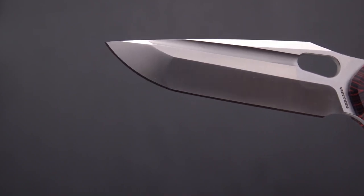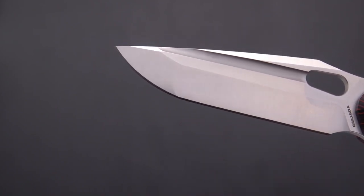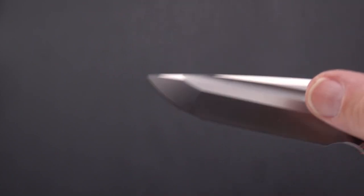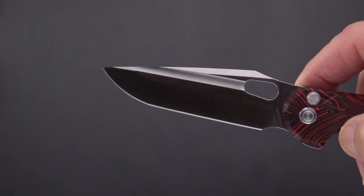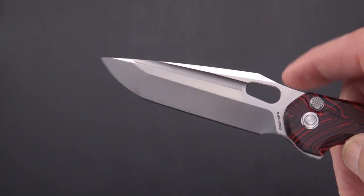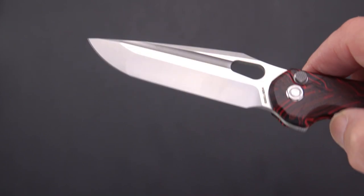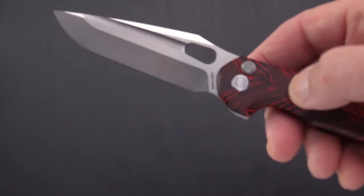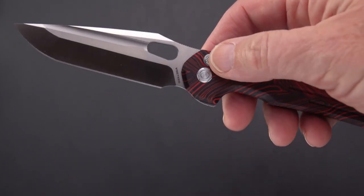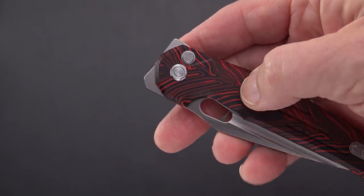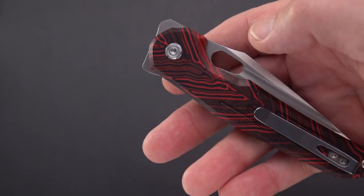We do have a hollow and we do have a flat, and we've got a very pronounced fuller, an opening hole, and yes it is a button lock. Check it out, we're going to talk more about that button lock in a moment.